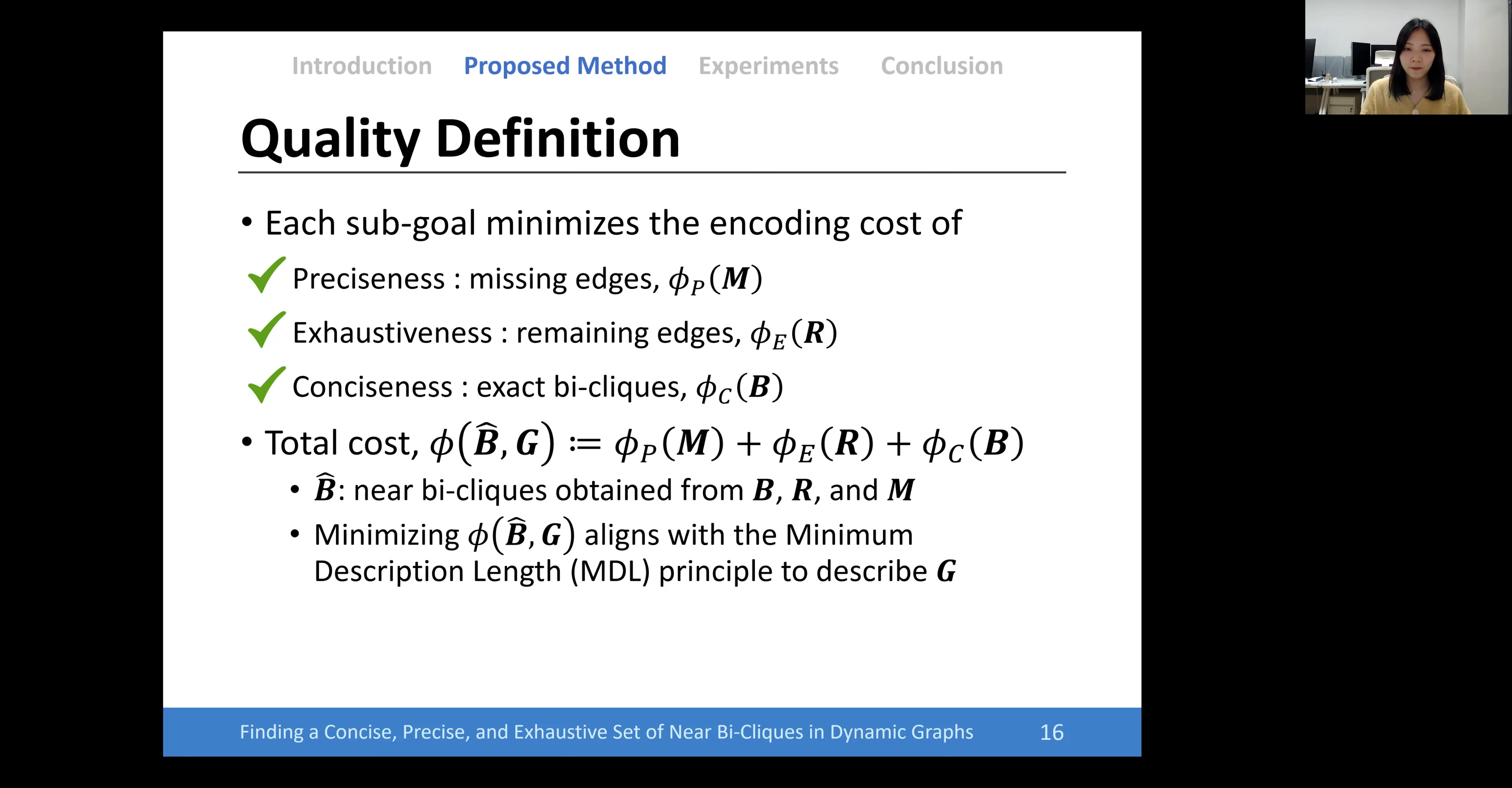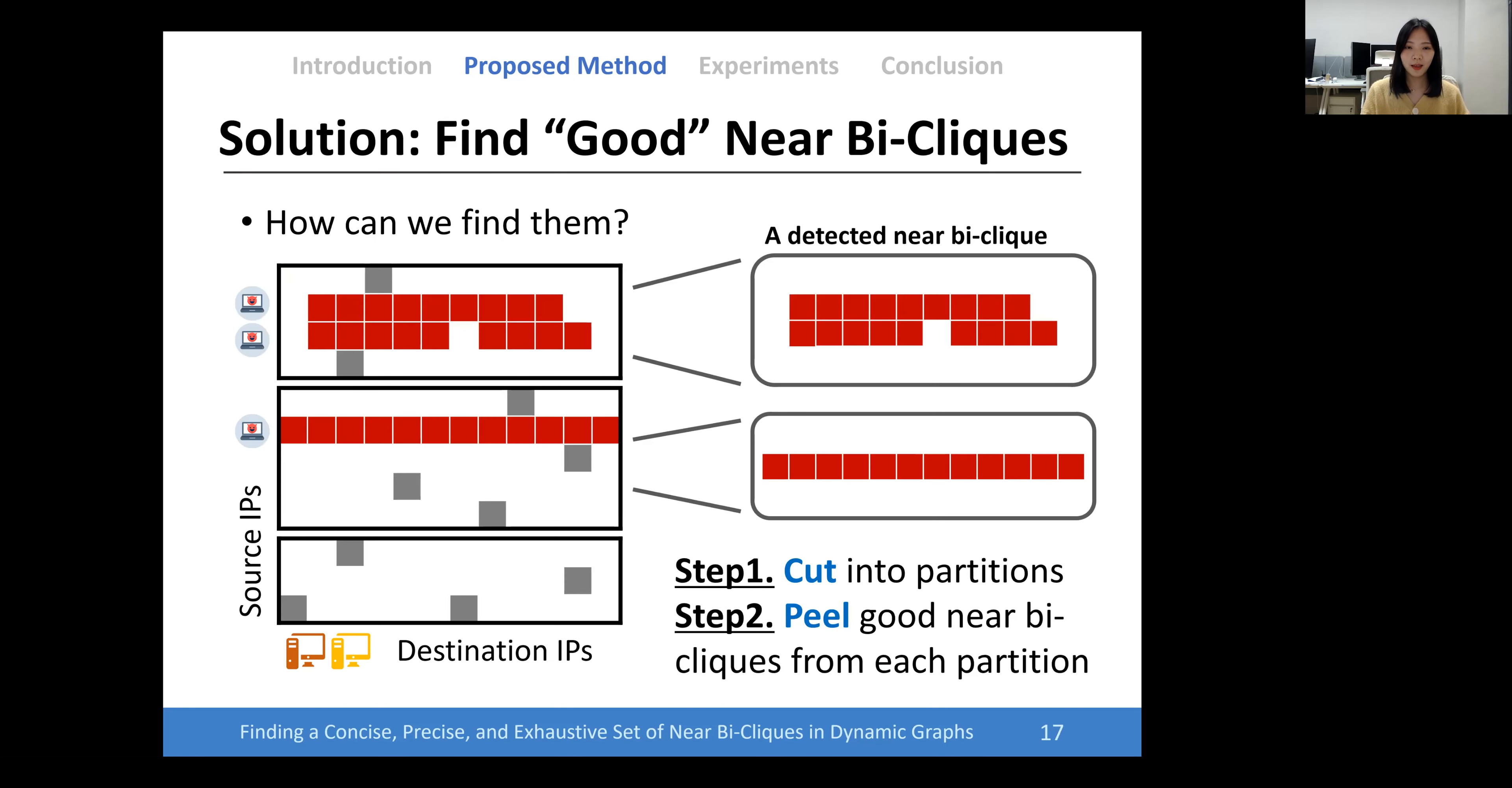Here, B hat is defined as a near bi-clique obtained from B, R, and M. Then, how can we find them?